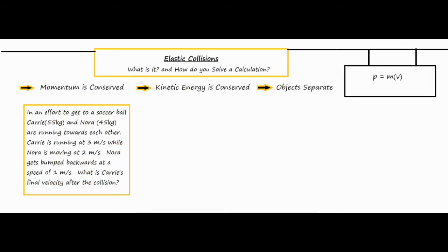In our box over here we have our question about a collision. It says: in an effort to get a soccer ball, Carrie, who is 55 kilograms, and Nora, who is 45 kilograms, are running towards each other. Carrie is running at three meters per second while Nora is moving at two meters per second. Nora gets bumped backwards at a speed of one meter per second. What is Carrie's final velocity after the collision?